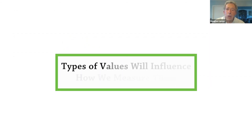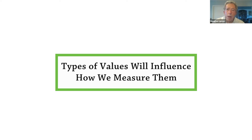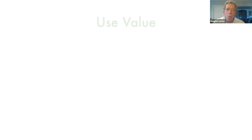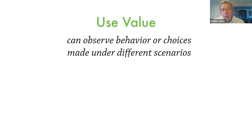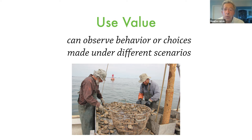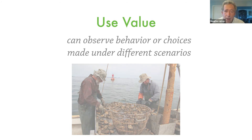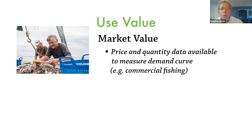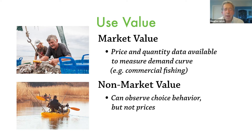These different types of values, whether from this ecosystem services list or another one, will influence how we measure them. The example of farming oysters — or it could be fishing or other provisioning activities we get from an ecosystem — are examples of use values where you can observe behavior or choices and get prices and quantities, particularly when you have a market. That simple example is how we do valuation when we have price and quantity data and we get the market value. Those producer and consumer surplus calculations are what we're trying to measure.